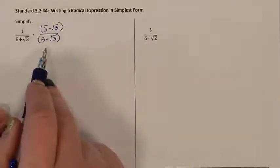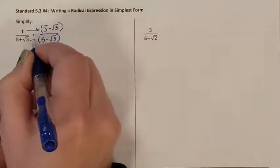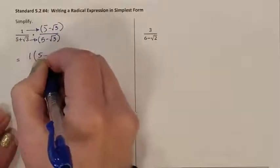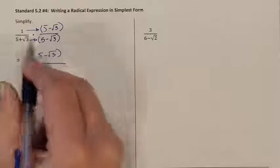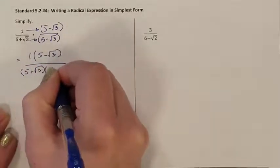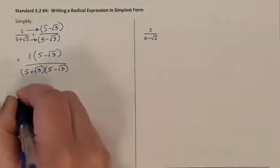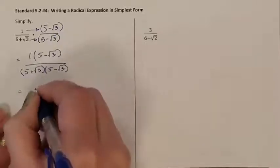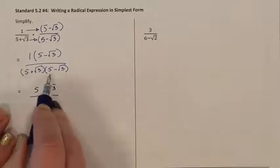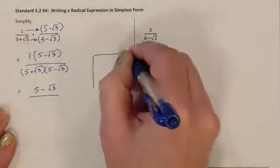Now we have two fractions. Remember that you multiply fractions straight across. So we're going to multiply straight across: we have 1 being multiplied by the 5 minus root 3 in the numerator, and our denominator has 5 plus root 3 being multiplied by 5 minus root 3. I'm going to use the area model to make this easier, because when square roots are involved, kids often lose things.